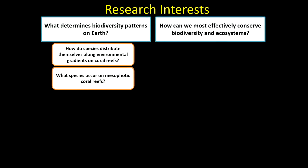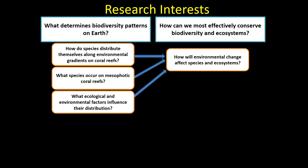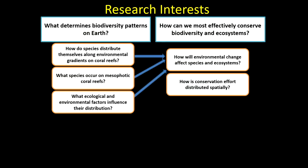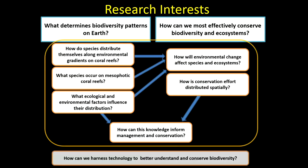There's a very basic question: what species occur on mesophotic coral reefs, because we know very little about this. We know a lot about shallow water coral reefs and not a lot about what lives a bit deeper. What ecological and environmental factors influence the distribution of species, particularly in mesophotic habitats? And then all of these questions lead into the more applied side of research - things like how will environmental change affect species and ecosystems, and how is conservation effort distributed spatially to prioritise limited conservation funding?